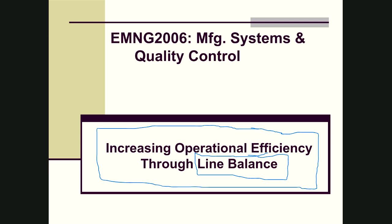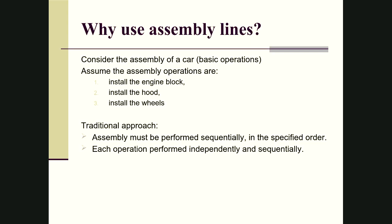As we move through the unit towards the end, we're going to look at an elaborate mechanism that can be used for creating a line balance. It is a methodology called RPW, and we'll see what that is when we get to it. For the moment, let us begin by looking at some basic concepts relating to line balancing, starting with why assembly lines are used.